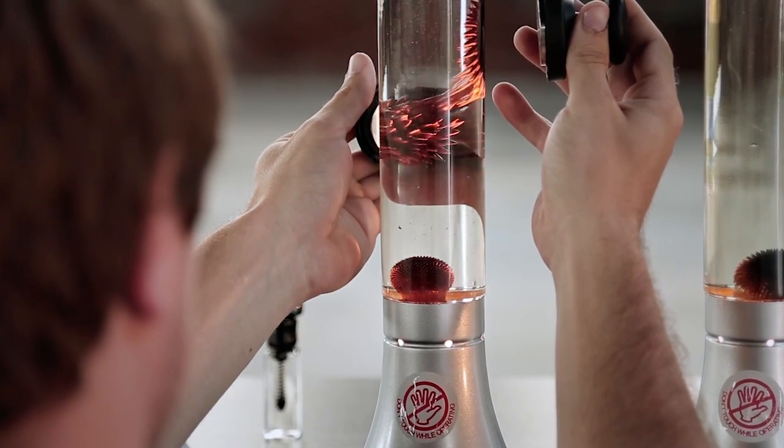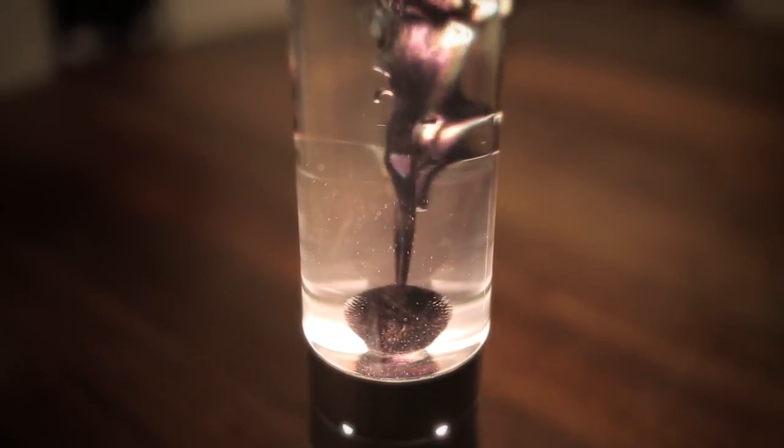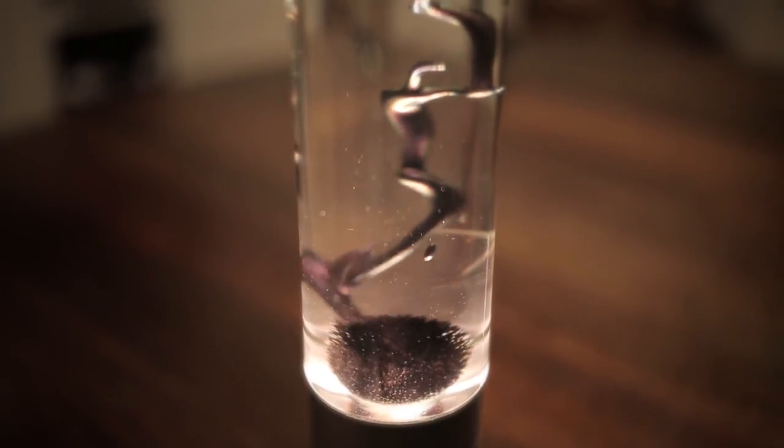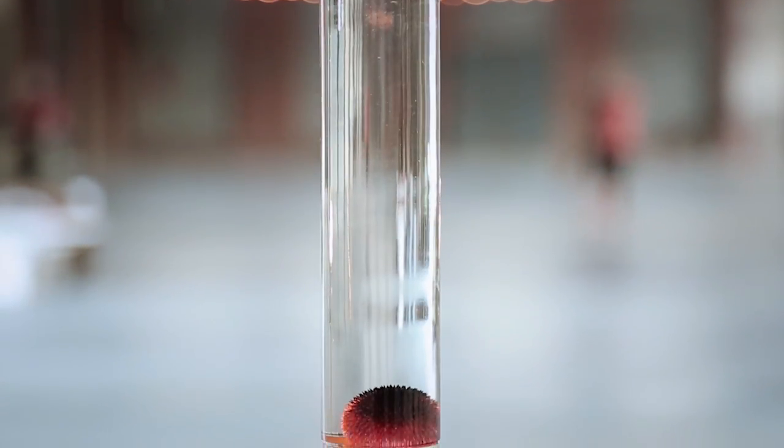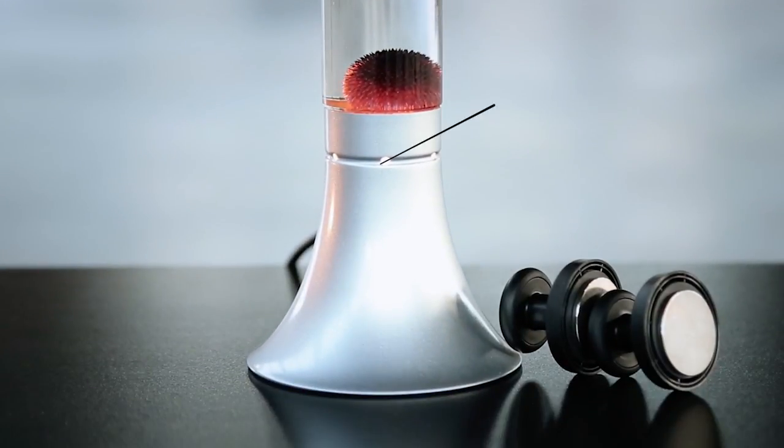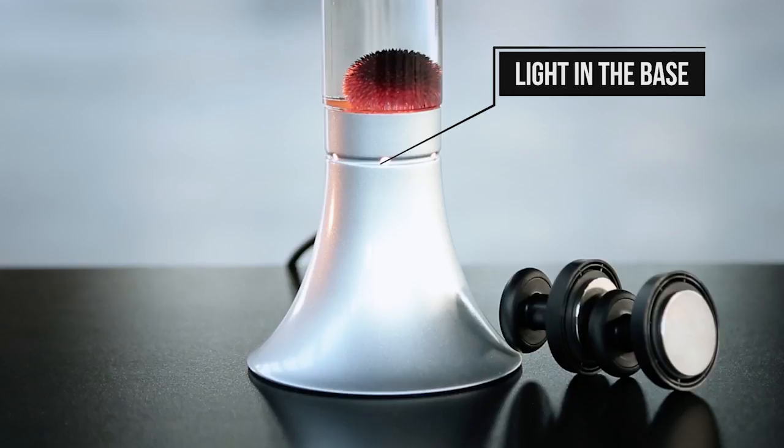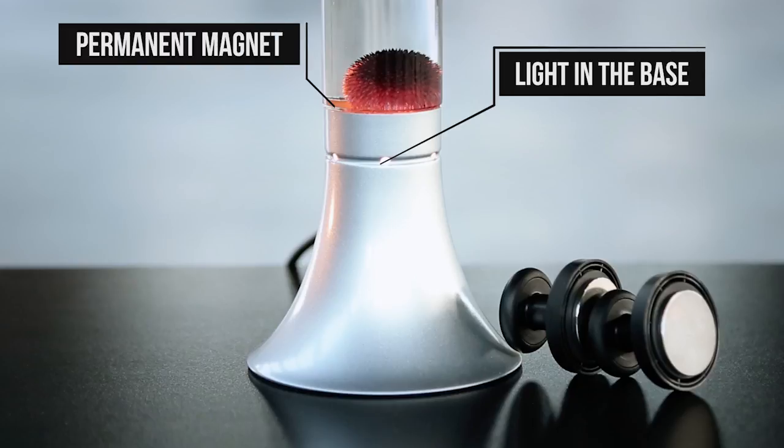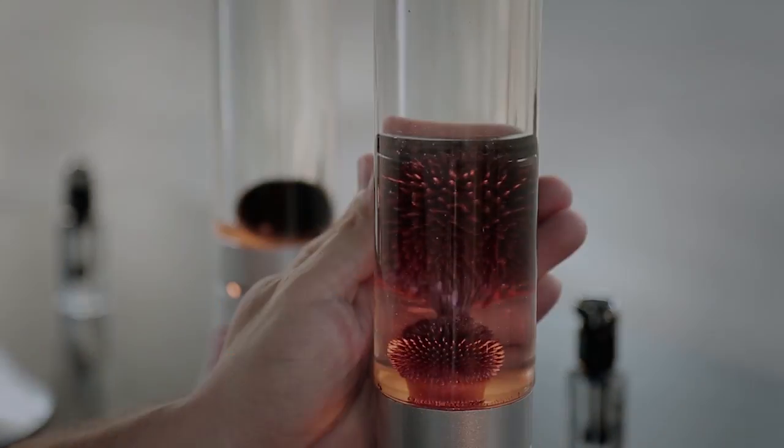This is the illumination. It has a light in the base that really brings out the vibrant color of the ferrofluid and a permanent magnet at the bottom that keeps the ferrofluid magnetized and spiky.